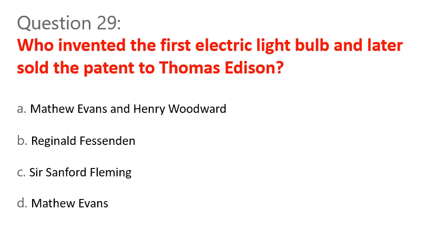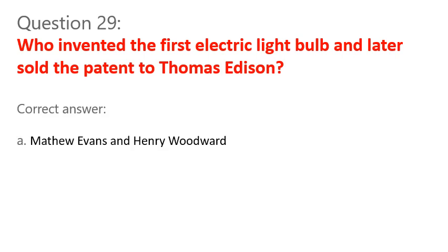Question 29. Who invented the first electric light bulb and later sold the patent to Thomas Edison? A. Matthew Evans and Henry Woodward. B. Reginald Fessenden. C. Sir Sanford Fleming. D. Matthew Evans. Correct answer: A. Matthew Evans and Henry Woodward.